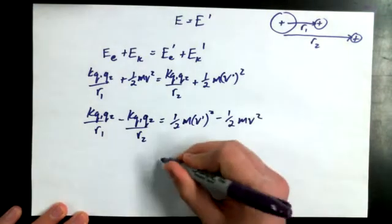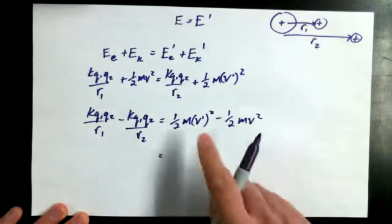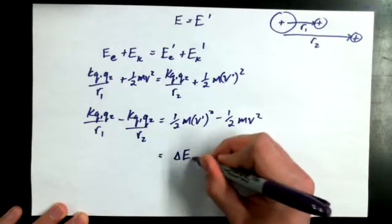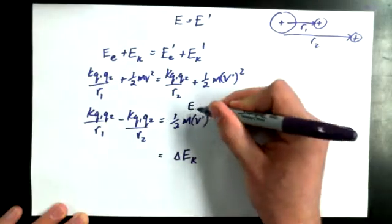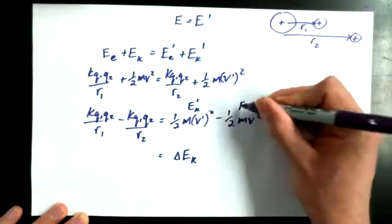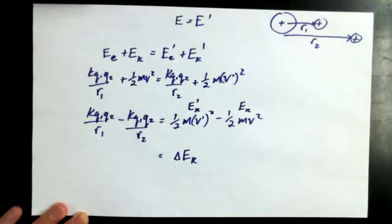What you end up getting is, well, on the right-hand side it's obvious. Final kinetic energy minus initial kinetic energy, you get delta ek, changing kinetic energy. Right, this is ek, minus ek primed, minus ek.